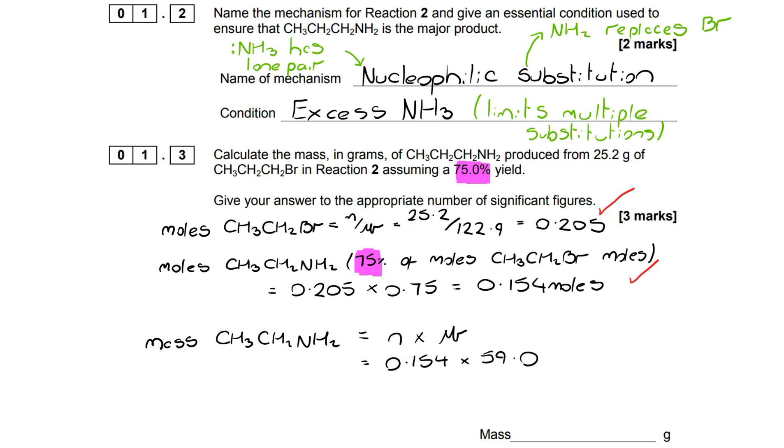From there I've got moles of 1-aminopropane and I can find out its Mr, in this case 59. From there I can work out its mass, and that's going to take me to 9.07 grams. Don't get to that final section and fall at the final hurdle. Pay close attention to the detail of the question. It wants an appropriate number of significant figures. Because the data that we were given was three significant figures, we can't go any higher than that. So our answer must be to three significant figures.